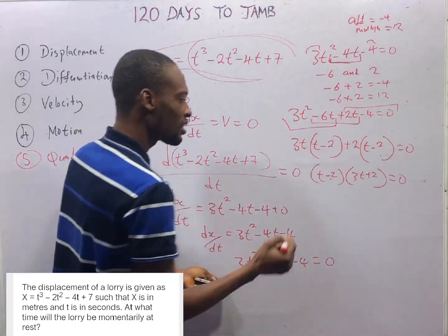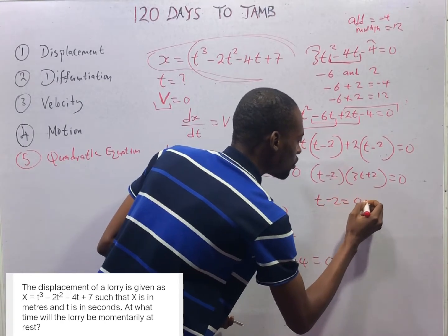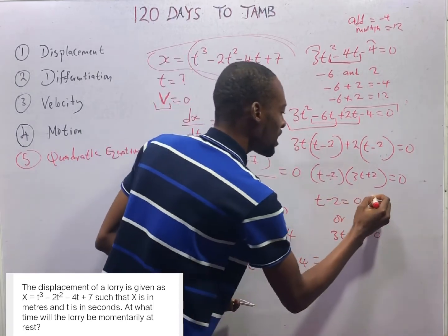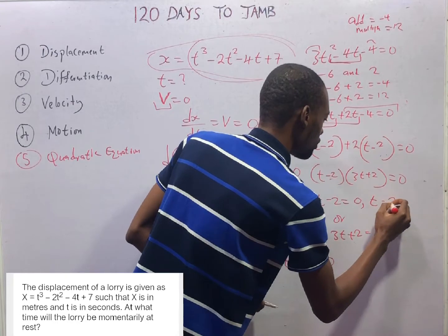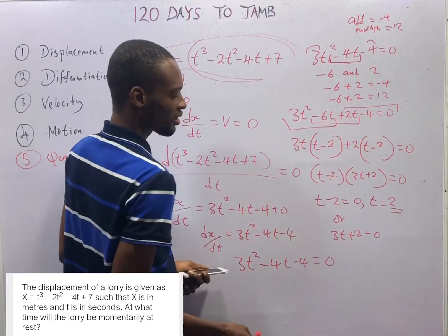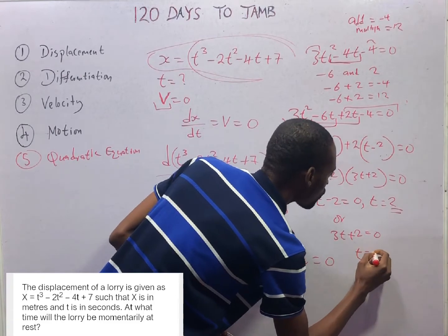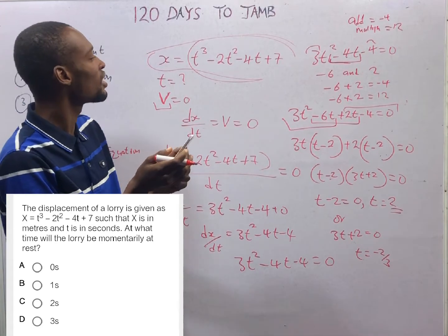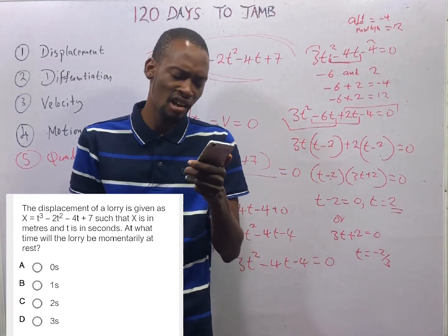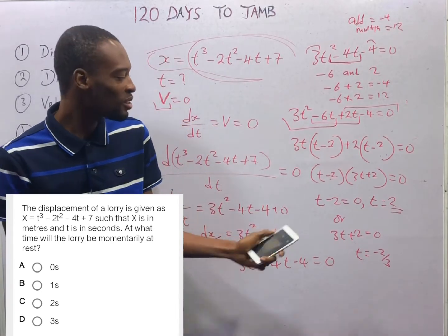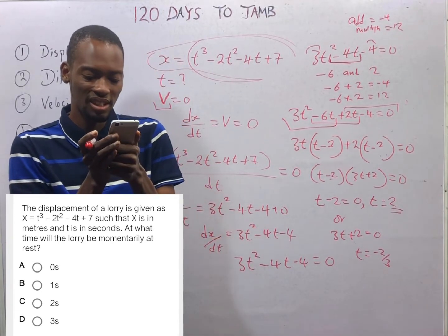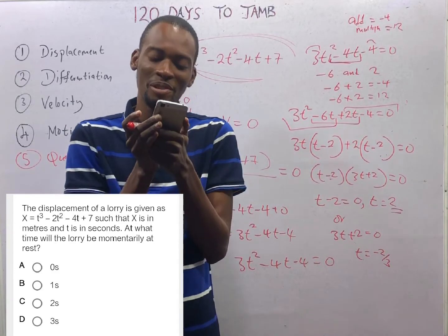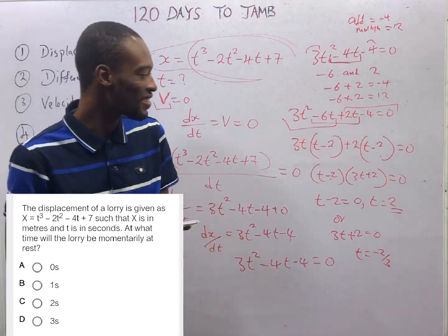From here, t − 2 = 0 gives t = 2, or 3t + 2 = 0 gives t = −2/3. Those are the two possible times when the lorry will be momentarily at rest. However, time cannot be negative, so we go with 2 seconds. The lorry will be momentarily at rest at 2 seconds. Option C is the correct option.